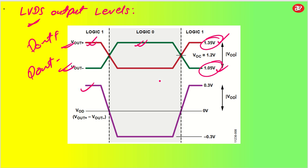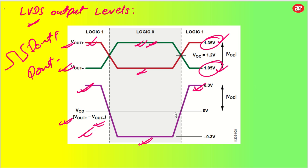The output is nothing but V output plus minus V output minus. For example, 1.05 minus 1.35 gives minus 0.3 V — so minus 0.3 volt is the negative clock. And 1.35 minus 1.05 gives 0.3 V — so this is the positive clock. This is how the output will be received. The input was the same and the output was also the same. If you want, you can have a lower logic or lower voltage level as well.